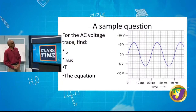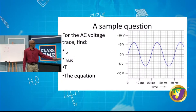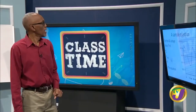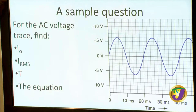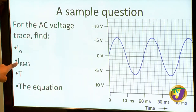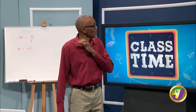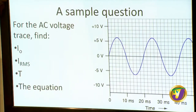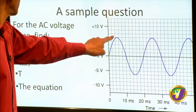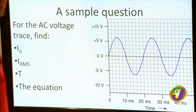Let's look at some sample questions. Here we have an AC voltage graph — this is what you would find on an oscilloscope. For the AC voltage trace, we want to find V₀ (peak voltage), V_RMS, T, and the equation. V₀ is any one of the peaks on the graph. Reading the graph, the peak is about 6 volts (approximately 6.25 volts, since each division is 1.25, but we round to 6 volts).